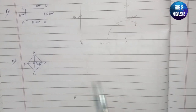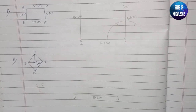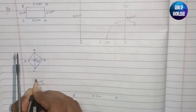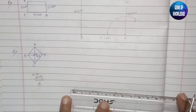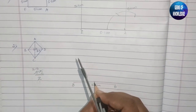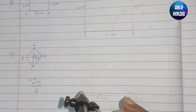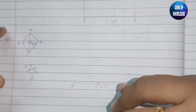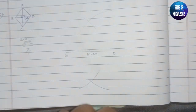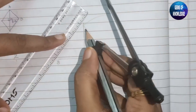BD is 5.2 centimeters. We need to find its midpoint, so we divide 5.2 by 2, which gives 2.6 centimeters as the exact midpoint. To locate it geometrically, we take more than half the length and cut arcs above and below the line from both ends. The intersection of those arcs gives the exact center point. We draw the perpendicular bisector through this center point.